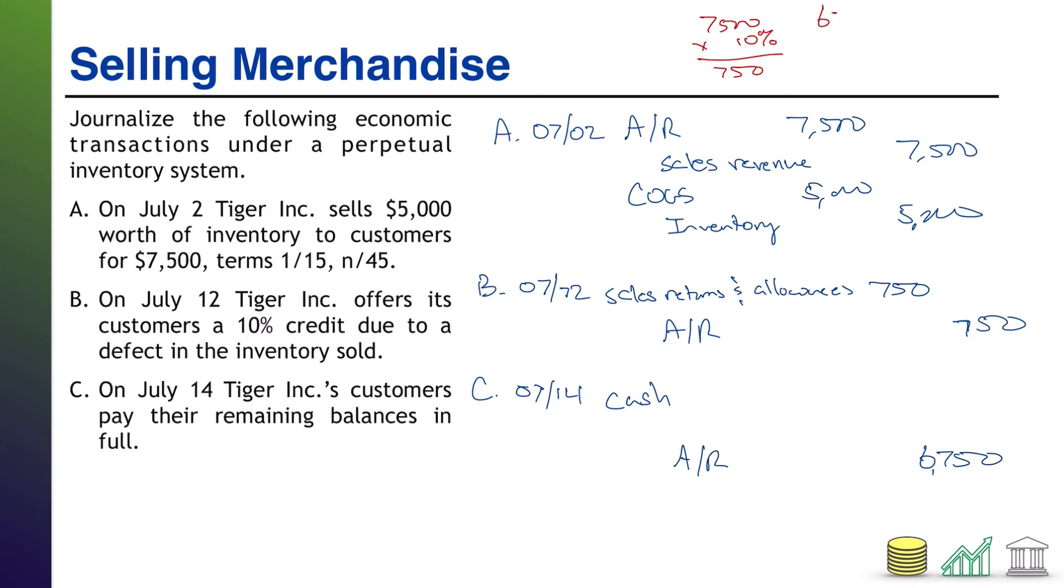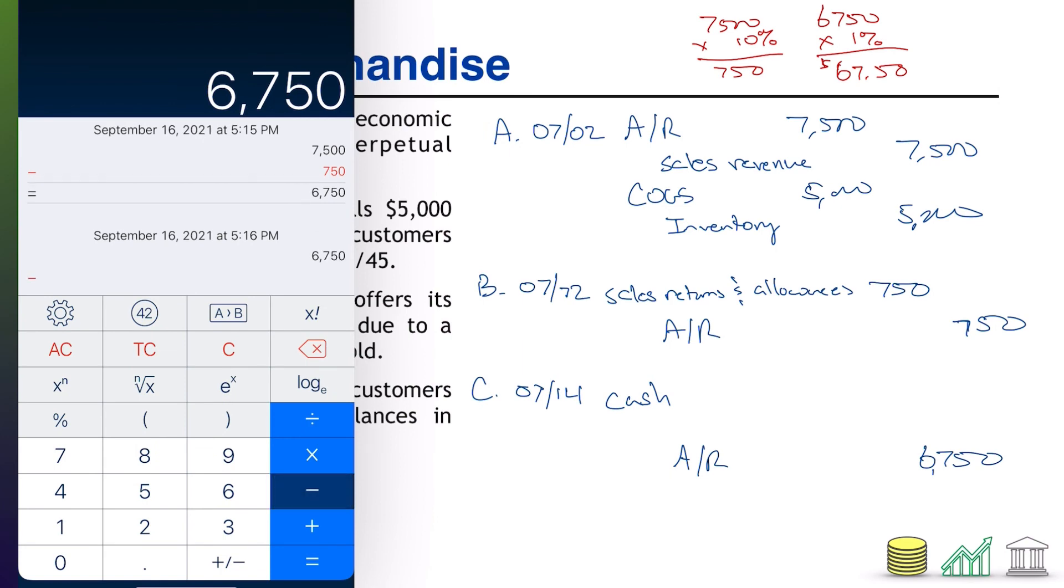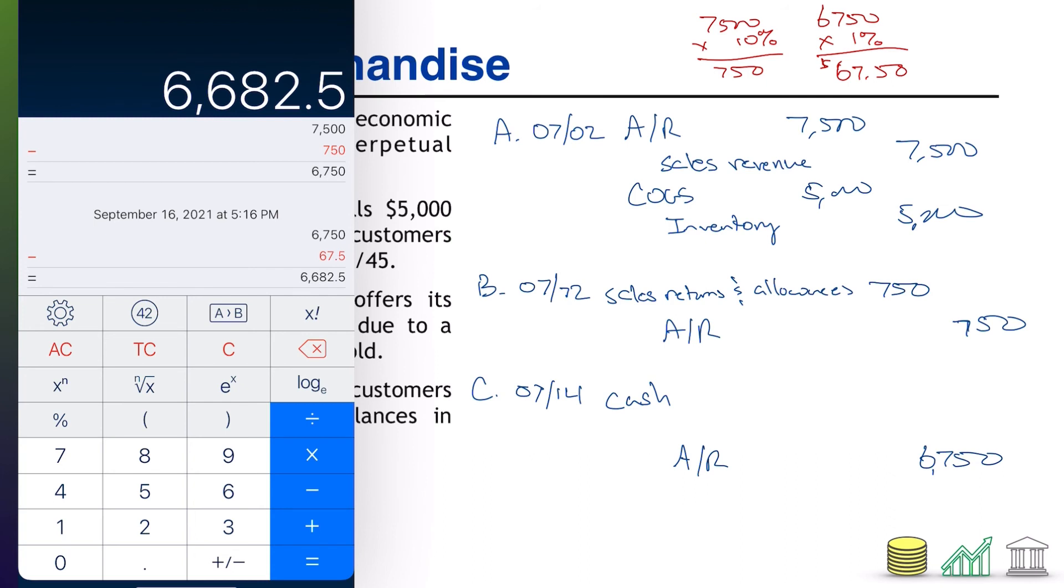So $6,750 times 1% is $67.50. I'm sorry, it's not a nice round number. They're going to get that as a discount, which means they don't have to pay that. So when we talk about the cash we're going to receive, $6,750 minus $67.50 means that the total cash received is actually only going to be $6,682.50. Now our journal entry is out of balance though. What about that $67.50 that we didn't debit to cash? What do we debit it to?